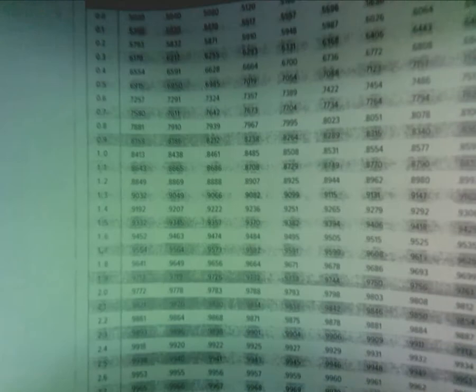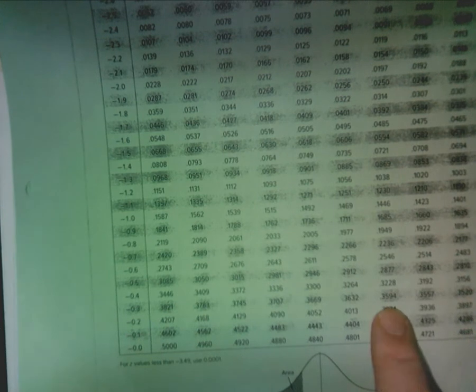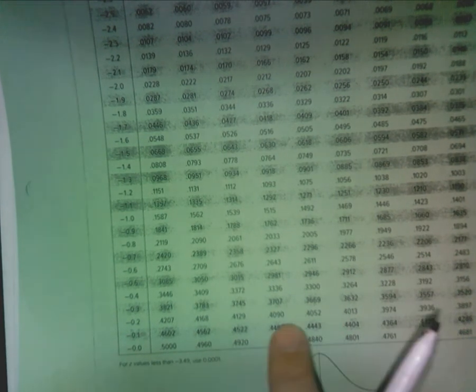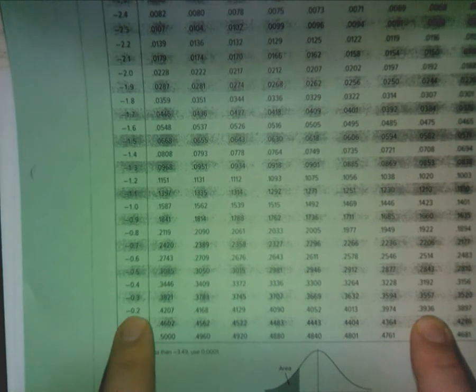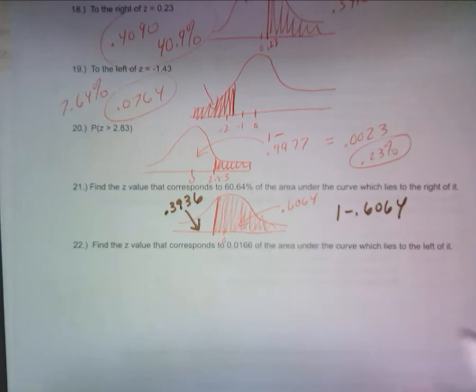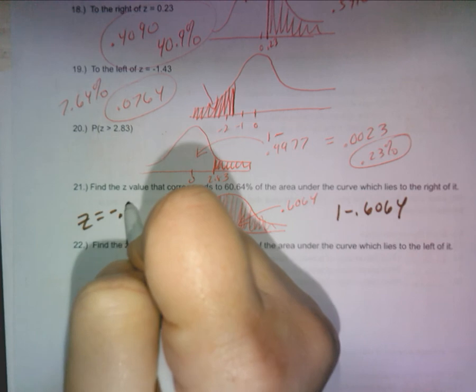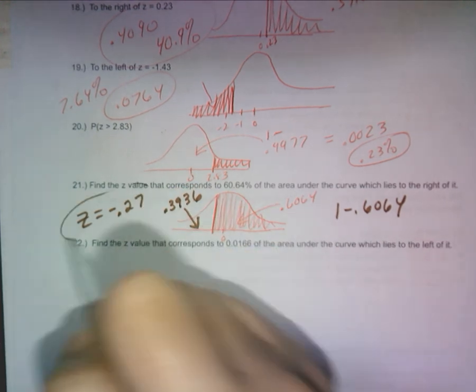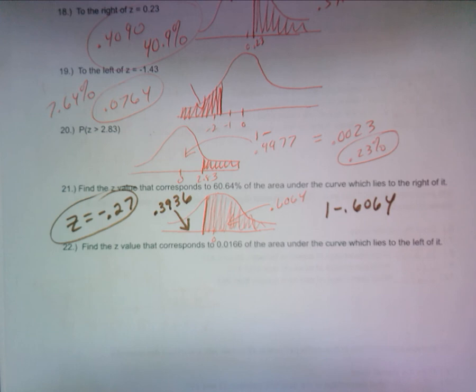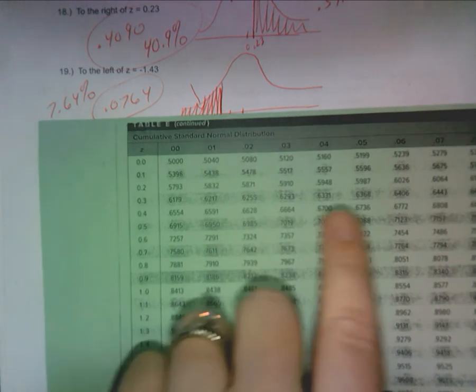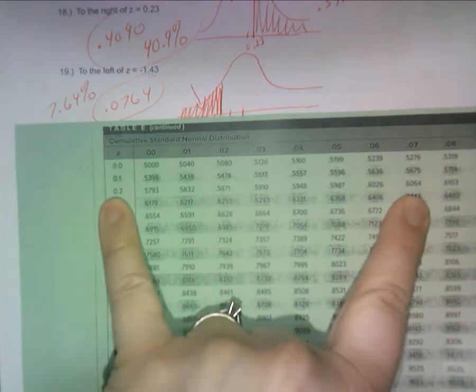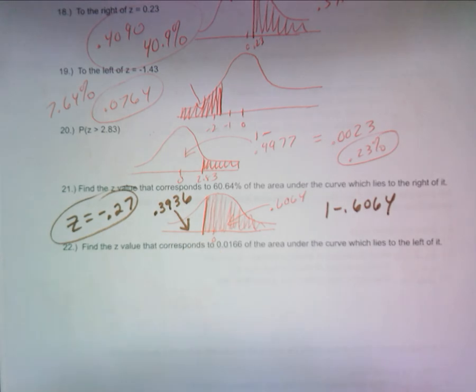I can find it somewhere, come on honey, 3936. Right there. It's a negative 0.2 and a 7. That makes sense. z equals negative 0.27. That's your answer. So however you decided to do that, you might have gone to find this guy, 60.64, which right here, but it was a positive 2.7, and you should realize that that needs to be negative in order to have 60% greater. You need that to be negative.